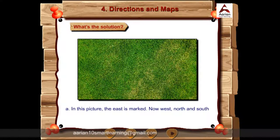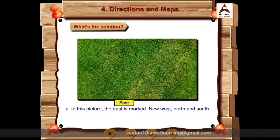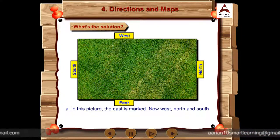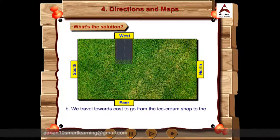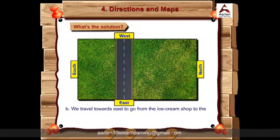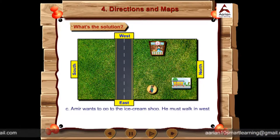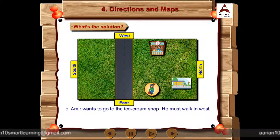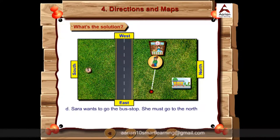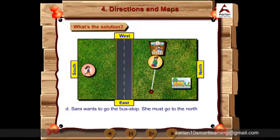In this picture, the east is marked. Now west, north and south are marked as shown. We travel towards east to go from the ice cream shop to the bus stop. Amir wants to go to the ice cream shop. He must walk in west direction. Sarah wants to go to the bus stop. She must go to the north direction.